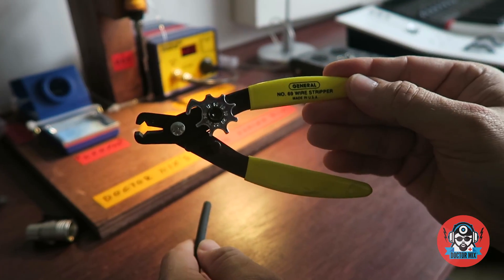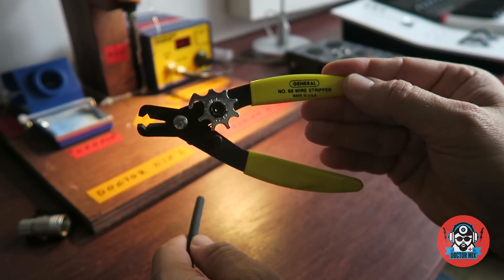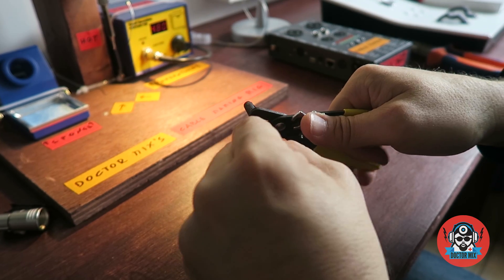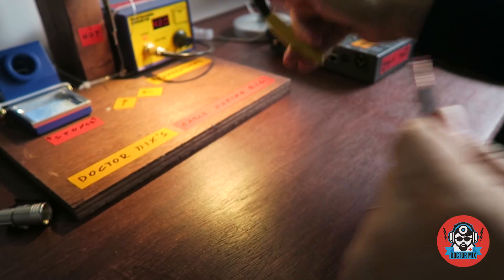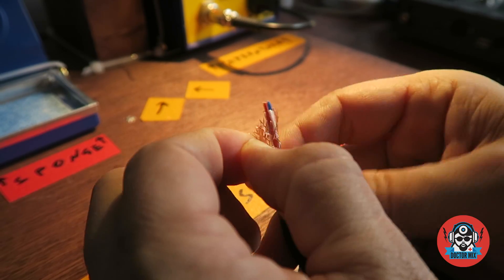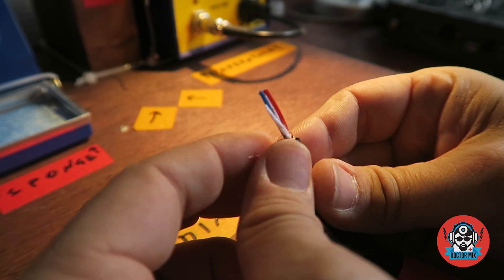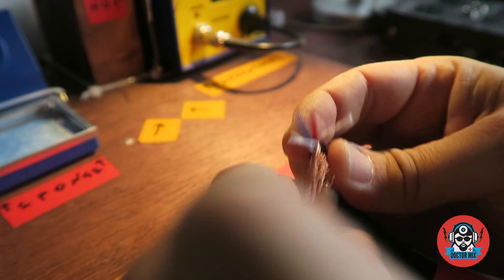This is a wire stripper. Professional one. That's what you need. You take a little bit of this and pull out. Done. So this and then twist it.